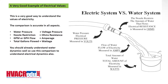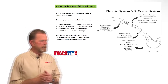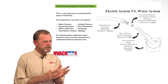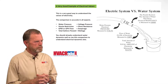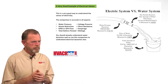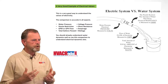Water pressure equals voltage pressure. Nozzle restriction equals ohms resistance. Gallons per minute or gallons per hour flow — that's our amperage. And total gallons flow is wattage. If you understand water dynamics, use this comparison to understand electrical dynamics. It's a great comparison of how things work.